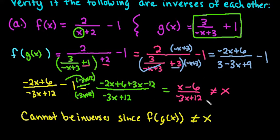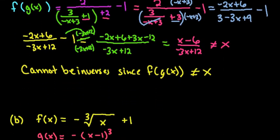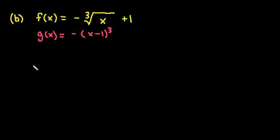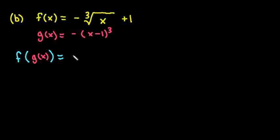Had I gotten x there, I would have had to check the other direction to make sure g of f of x also equals x. But since the first one does not equal x, we know they cannot be inverses because both have to hold. Let's look at another problem — this one's not quite as complicated. The first thing we want to do is find f of g of x. This means into our f equation we replace x with our g of x.